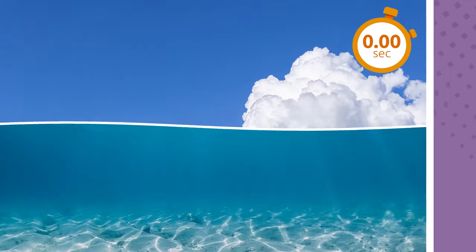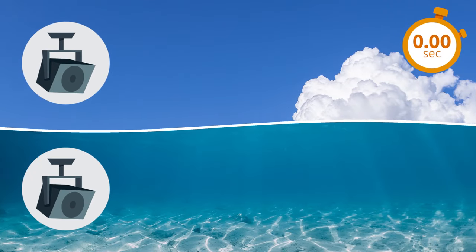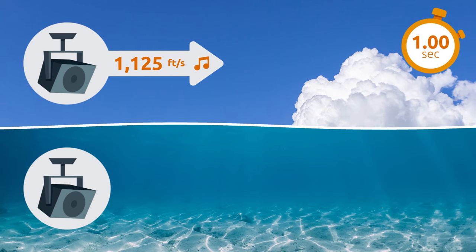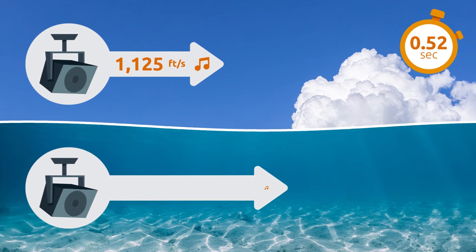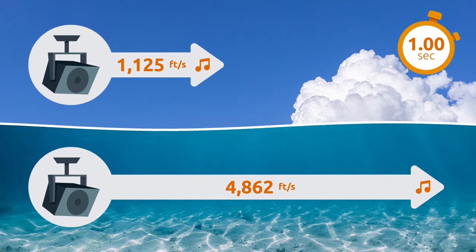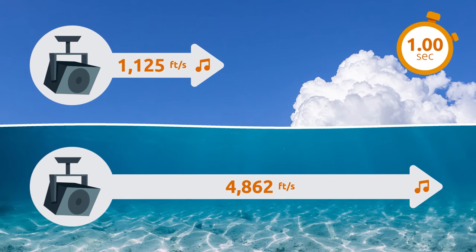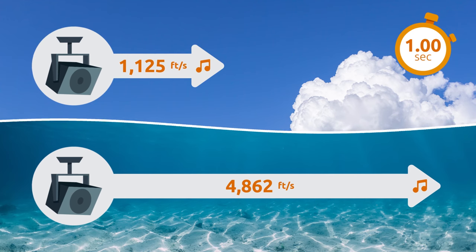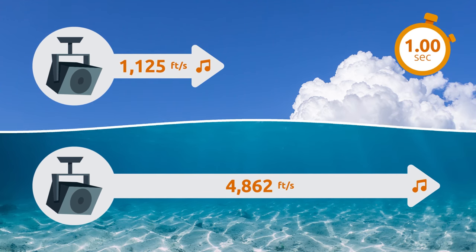Sound propagates in the shape of waves that travel in a straight line in all directions, and it travels faster in denser mediums. For example, sound travels 1,125 feet through air and about 4,862 feet through water in one second. Isn't it interesting that sound travels at different speeds depending on the medium it is in?